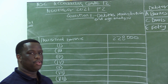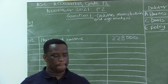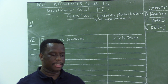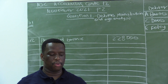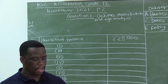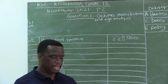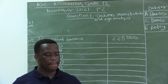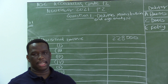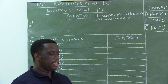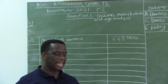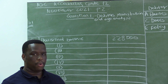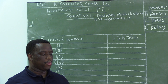Here the information given says Zigzag Traders sells ladies clothing on credit. Debtors are allowed a credit term of 30 days — underline that. So these people are given 30 days to settle their accounts.